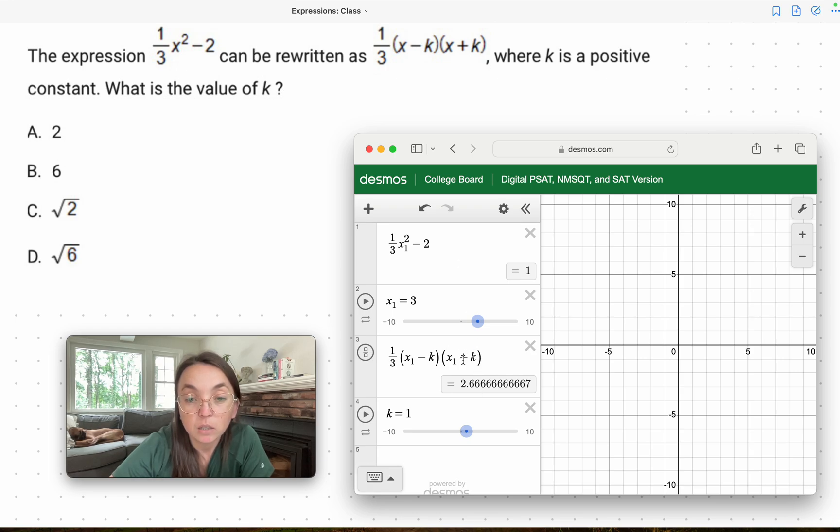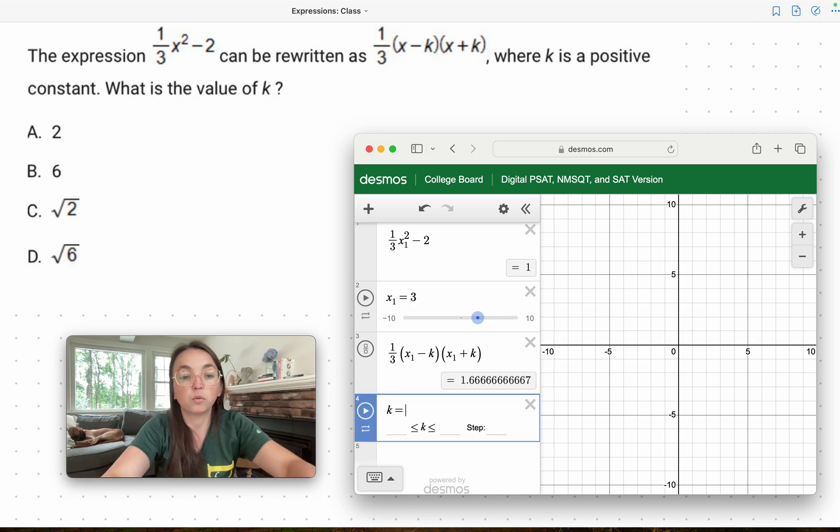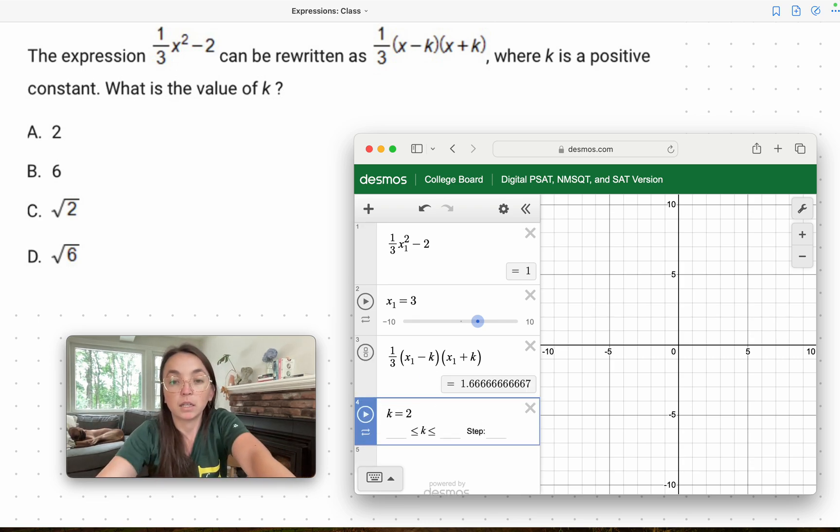Now, since these have to equal, because they're rewritten, it's equivalent expressions, we want this here to equal this side of the equation. They need to be equal. So what we're going to do is go through the options, and we're going to input the options for k to see if they end up getting equaled.